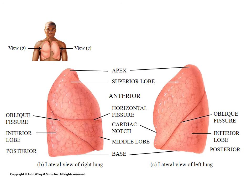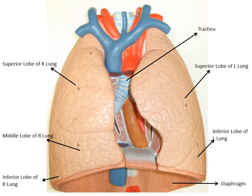This is another picture showing the different lobes of the lungs — superior lobe, inferior lobe, and again the right has a middle lobe. This gives you a different view of the lobes on one of the models.